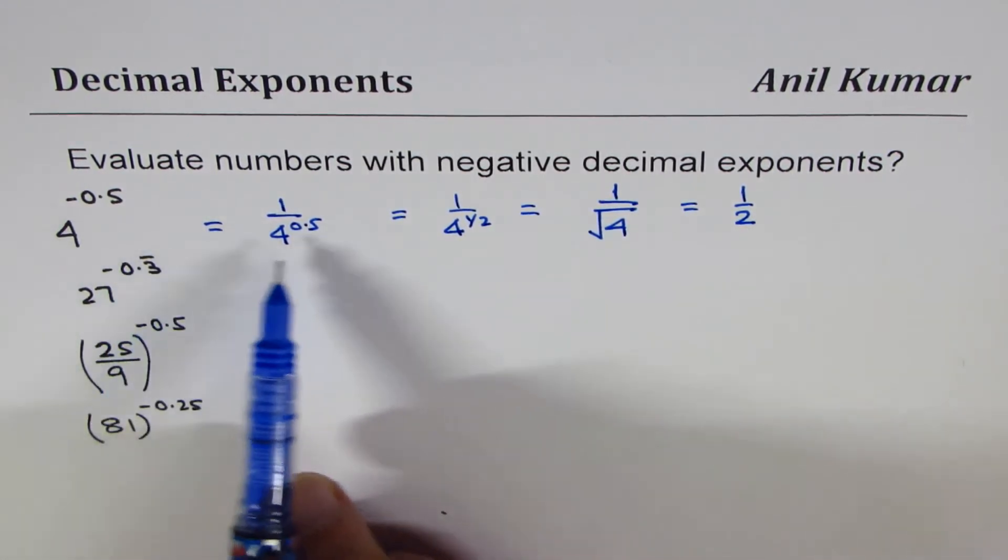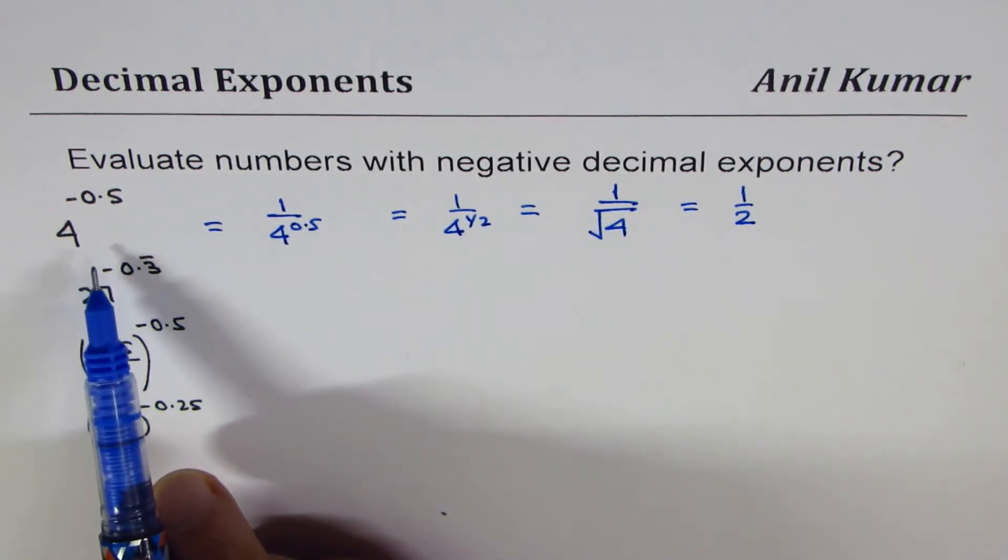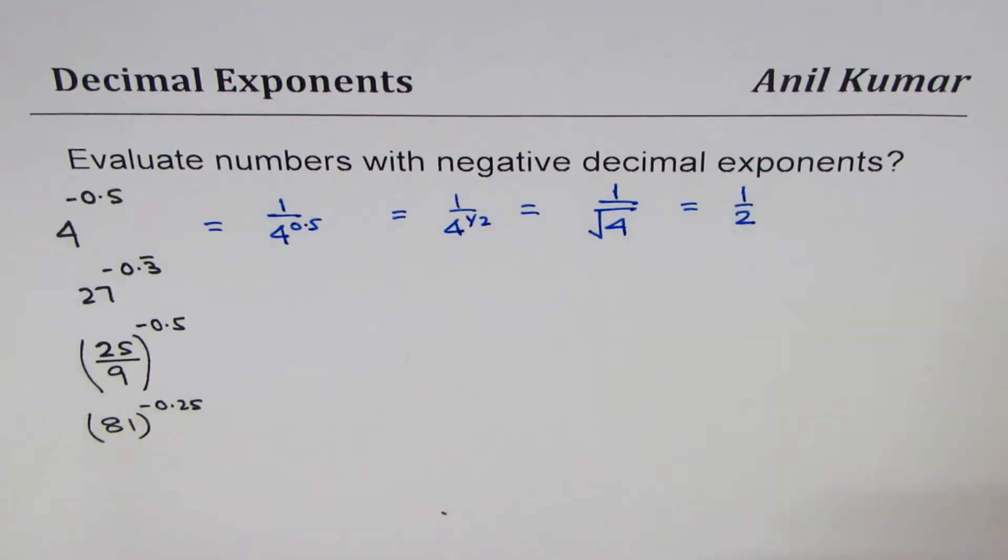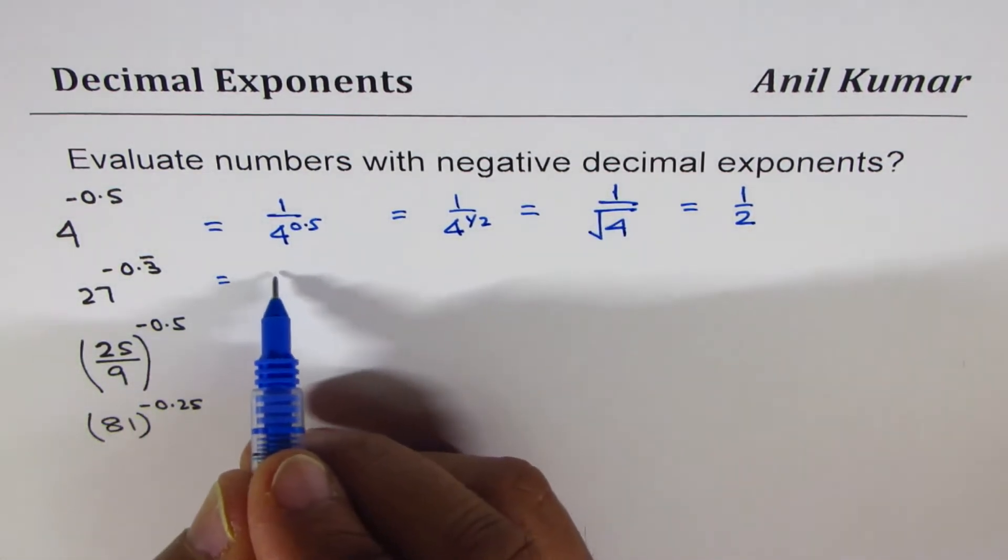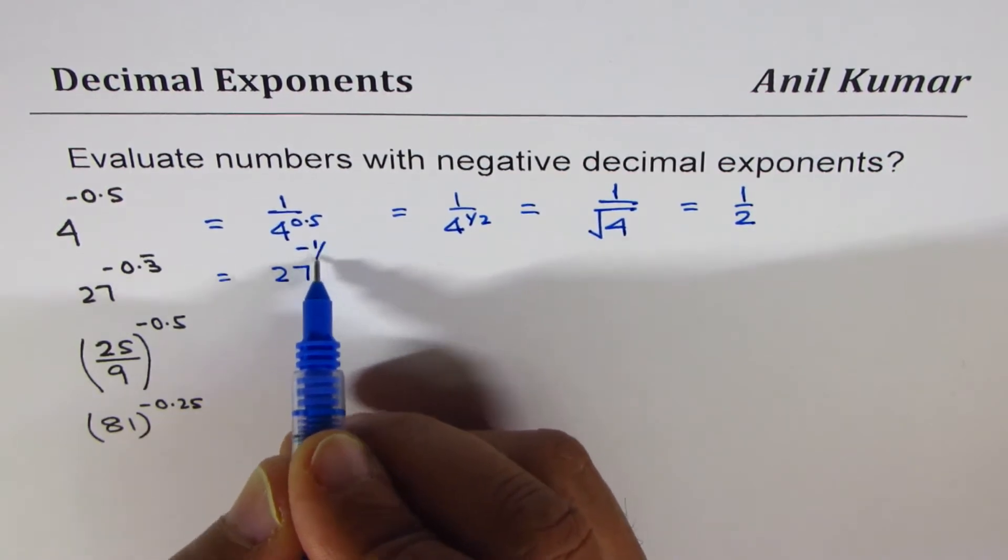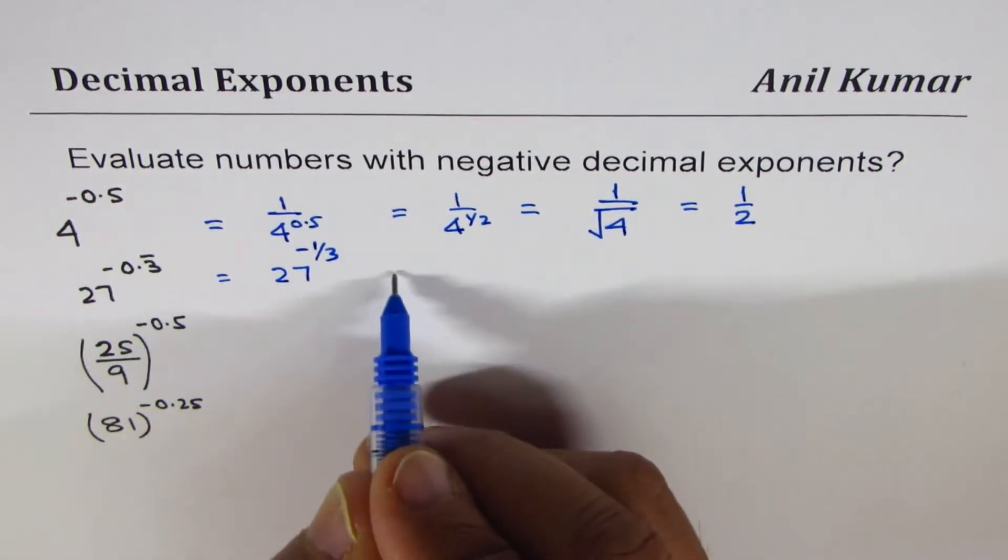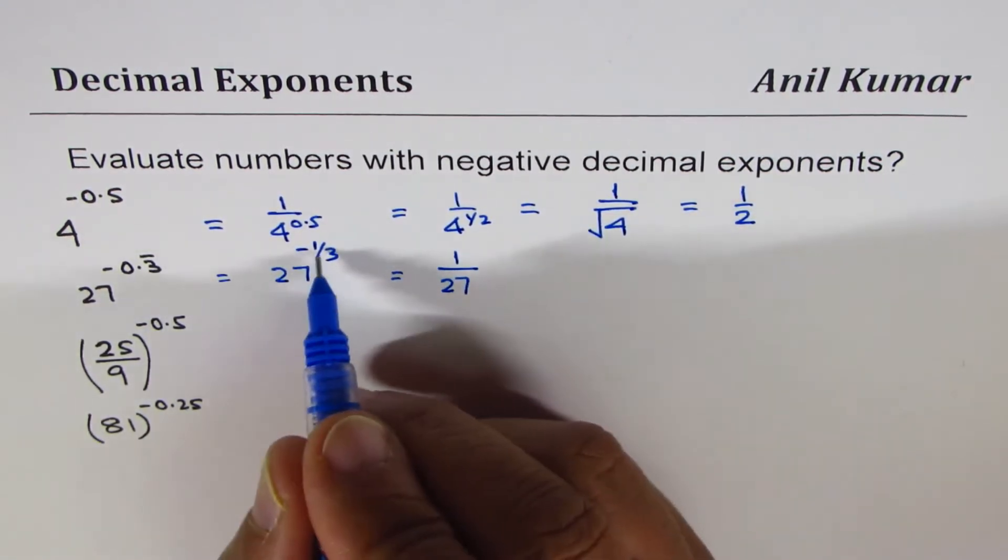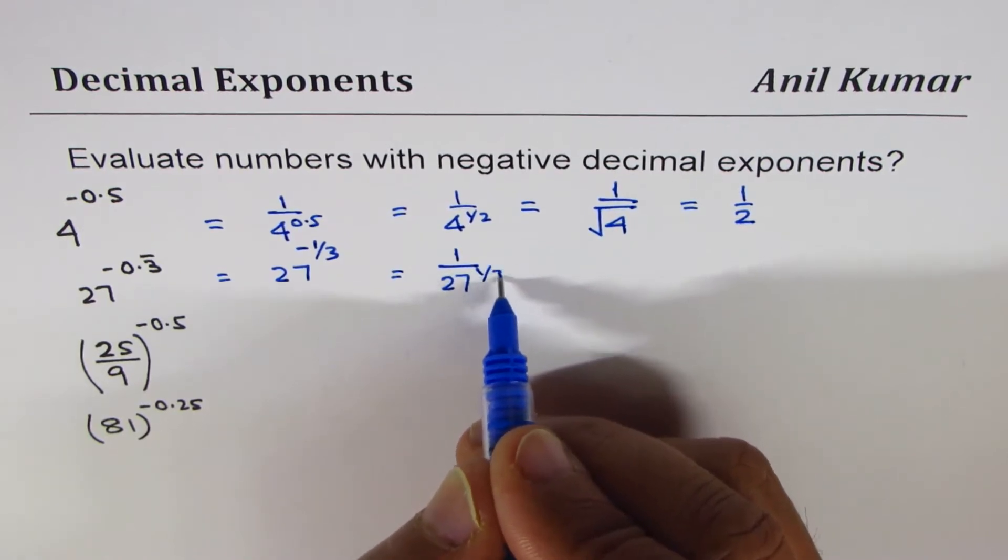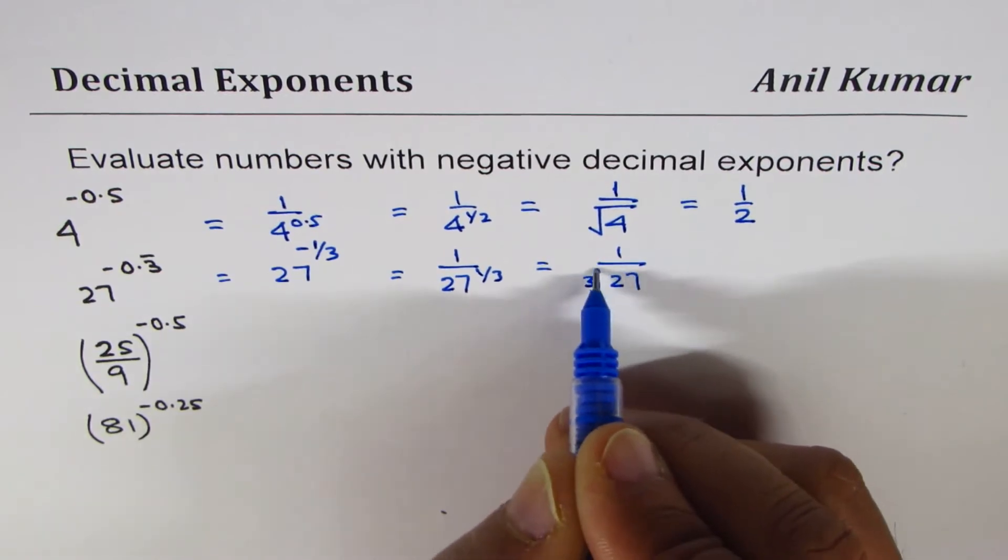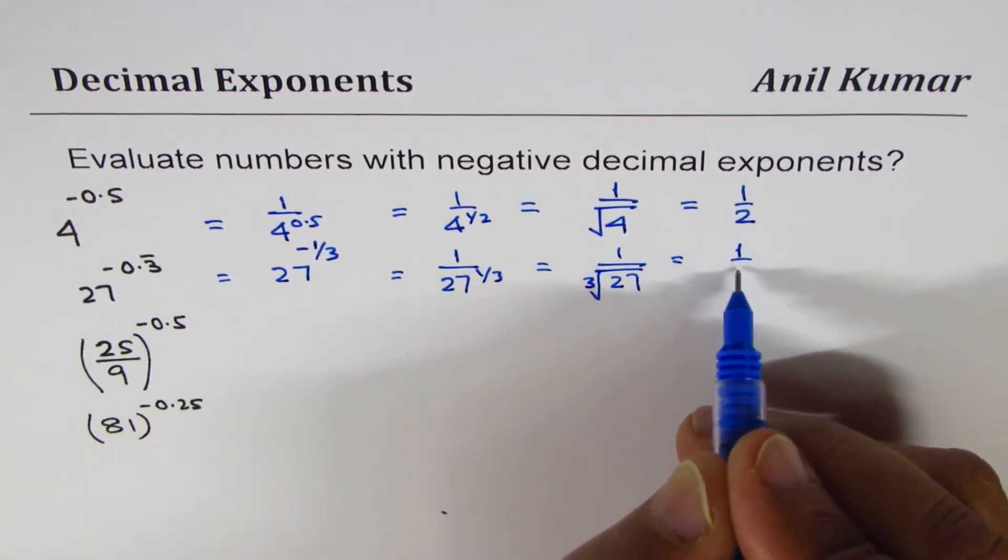So like this you could actually go in steps and evaluate the number with negative decimal exponents. Let's do the next one: 0.3 recurring is 1 over 3, so I write this as 27 to the power of minus 1 over 3. Now minus really means reciprocal, so it will be 1 over 27 to the power of 1 over 3, which is cube root. So it is cube root of 27 and that is 3, so we get 1 over 3 here.